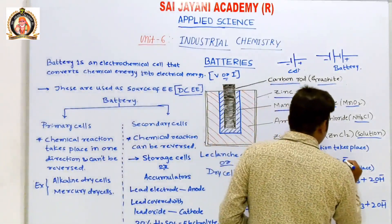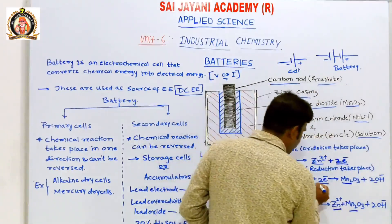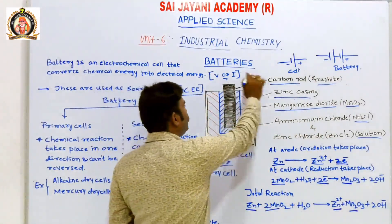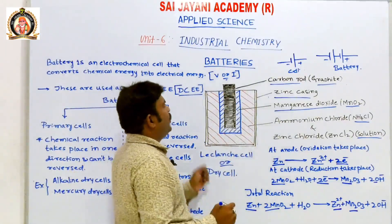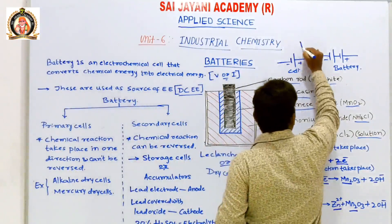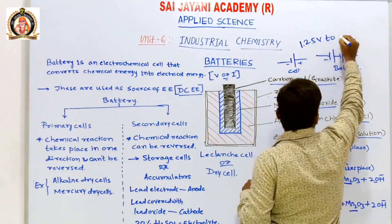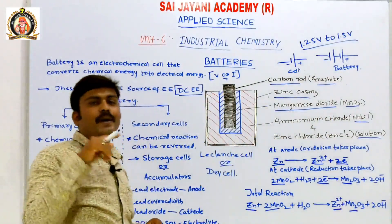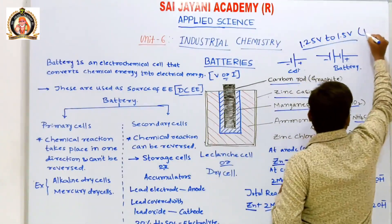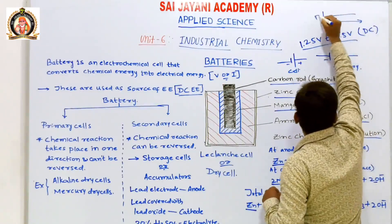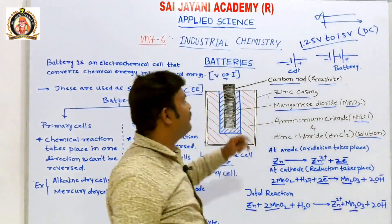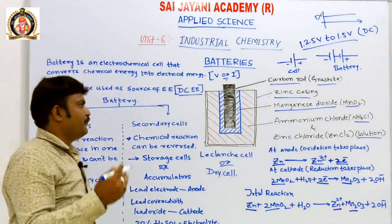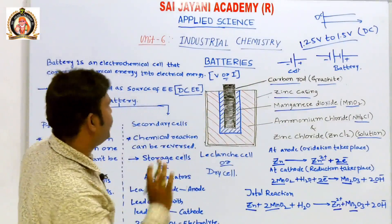One single dry cell can produce 1.25 to 1.5 volts DC. DC means direct current. So one single cell will produce 1.25 to 1.5 volts of DC electrical energy. This covers the construction and working of the dry cell.